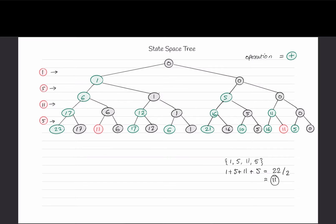We need to find the state of sum 11 in the state space tree. Following one path: we add 1, skip 11, add 5 — we get 11. On the second flow: skip 1, skip 5, include 11, skip 5 — we also get 11. Interesting: in this second flow no element from {1, 5, 5} is added, only 11 is considered, and we still get our answer.